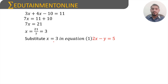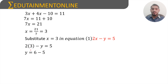Substituting x equals 3 into equation 1 — 2x minus y equals 5 — we get 2 times 3 minus y equals 5, so 6 minus y equals 5. Transposing, y equals 6 minus 5, therefore y equals 1.